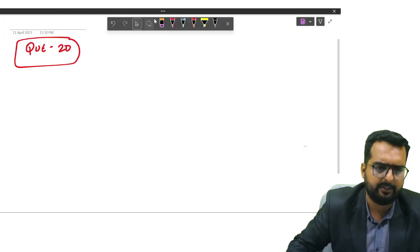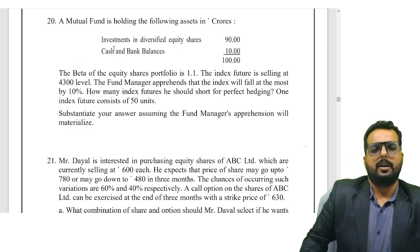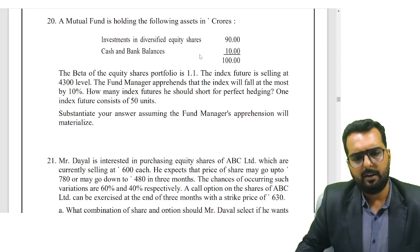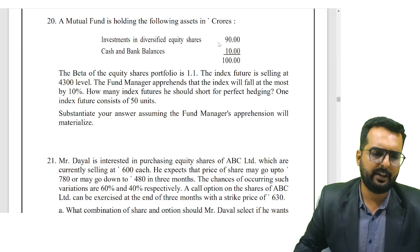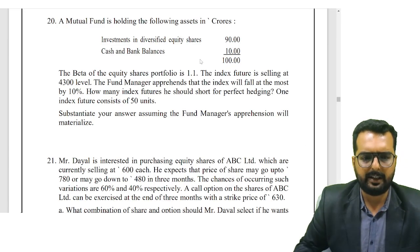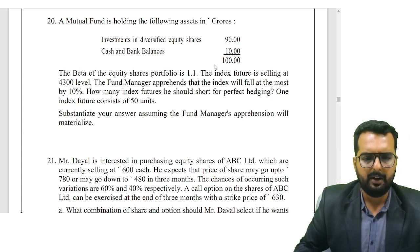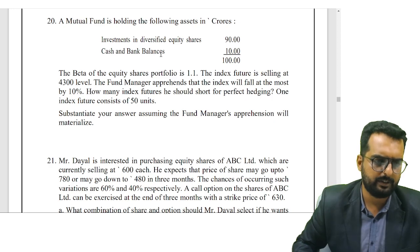Friends, super 50. Next question, question number 20. Here, this fellow is having a mutual fund. In equity shares, he is investing 90 crore. Cash in bank, 10 crore. Total, 100 crore. Beta of the equity is how much? 1.1. Index is selling at 4,300.